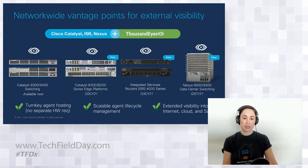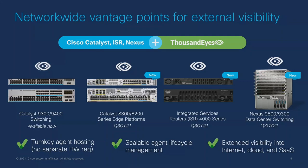The idea here is that ThousandEyes is effectively embedding its agent across various hardware platforms. Earlier this year, the integration with the Catalyst 9K was announced. The most recent announcement covers the edge router series as well as the data center switching platform. This provides options — effectively visibility outposts from which IT can get visibility into external environments — not just for users in branch offices consuming SaaS applications, but also for applications connecting to APIs or workloads hosted within a cloud provider. These platforms offer a turnkey agent managed via their respective management consoles.